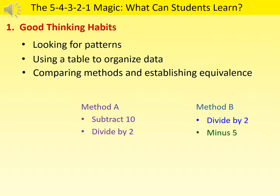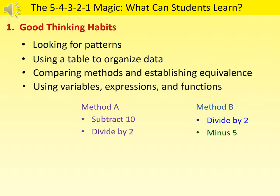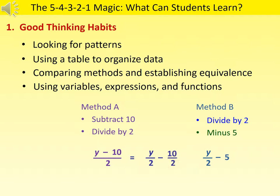This is a good opportunity to help students see the power of algebra. We can use a variable, say y, to represent the final answer. The algebraic expression for method A is y minus 10, divided by 2. The algebraic expression for method B is y divided by 2, then minus 5. We can use the distributive property to show that the left expression is essentially equivalent to the right expression.